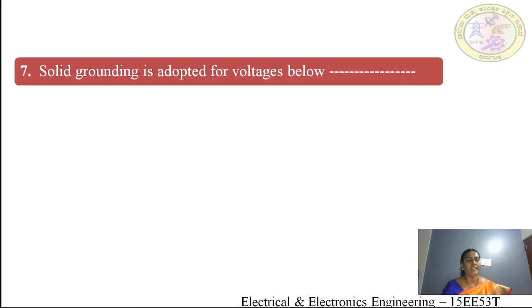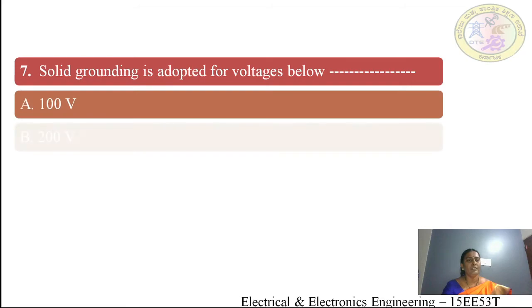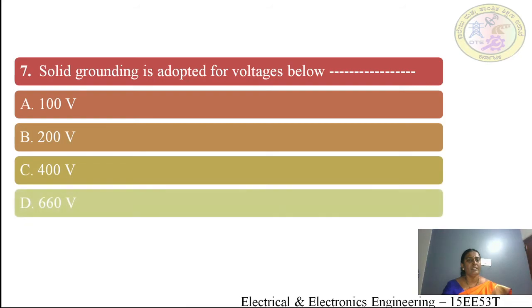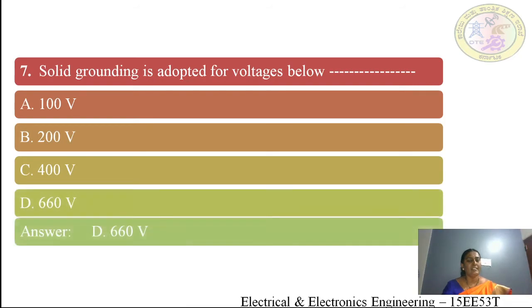Seventh question: solid grounding is adopted for voltages below — (A) 100 V, (B) 200 V, (C) 400 V, (D) 660 V. The answer is 660 V. For solid grounding, the adopted voltage is below 660 V.